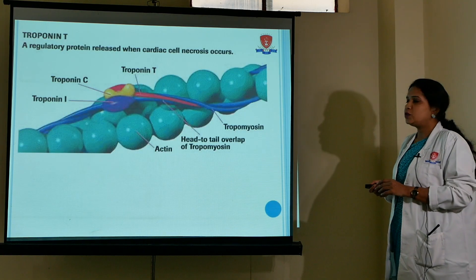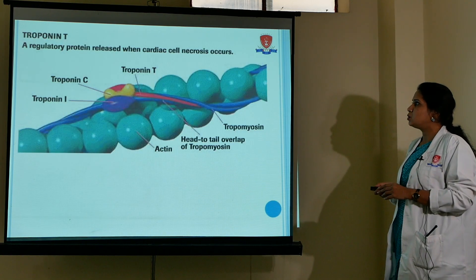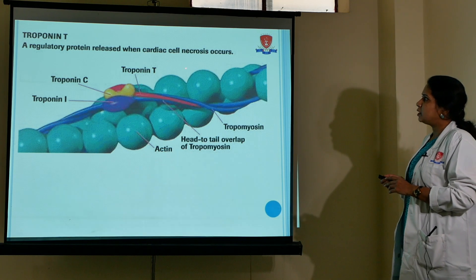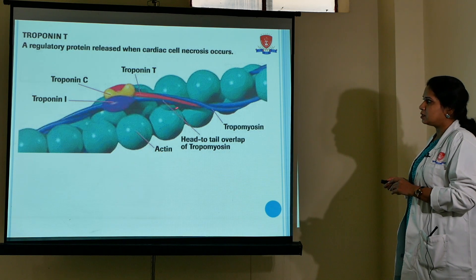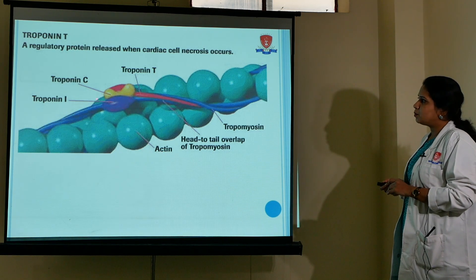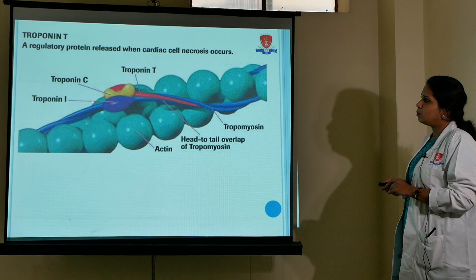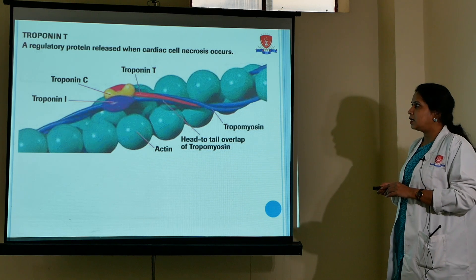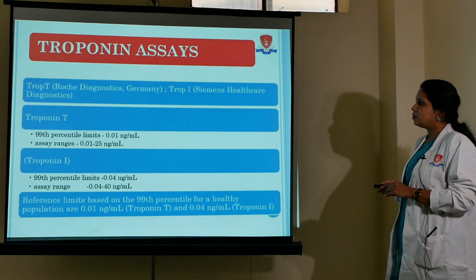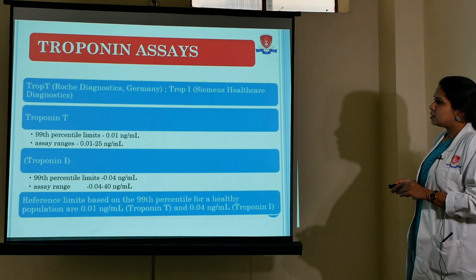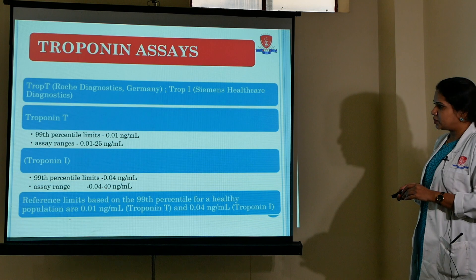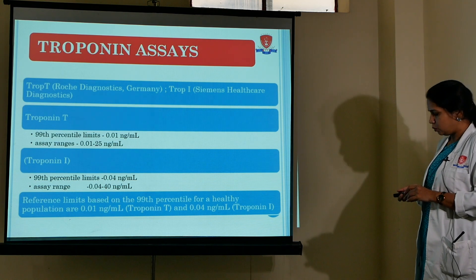Troponin T is a regulatory protein released when cardiac cell necrosis occurs. In the muscle protein troponin, the three components T, C, and I are present. Whenever there is damage or necrosis of cardiac muscle cells, these are released. Commonly available assays, along with their specificity and assay ranges, are also presented.